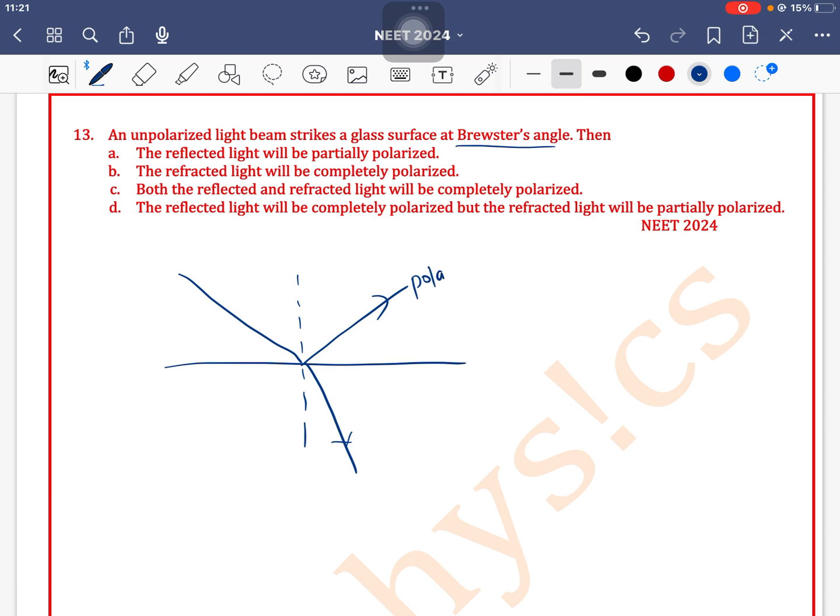The reflected ray of light is completely polarized, while the refracted light is partially polarized. So option A, the reflected light will be partially polarized, is incorrect.